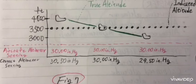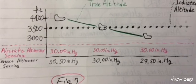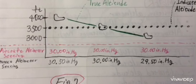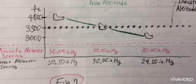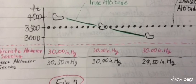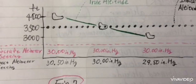When you fly from a high pressure area to a low pressure area without resetting the altimeter, the altimeter indicates a higher altitude.